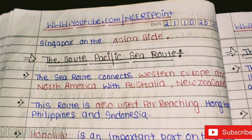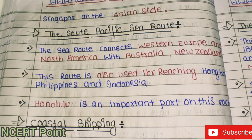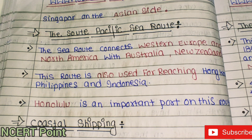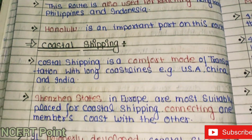The South Pacific Sea Route connects Western Europe and North America. This route is also used for reaching Hong Kong, the Philippines, and Indonesia. Honolulu is an important port on this route, providing connectivity along the way.